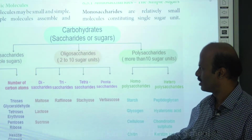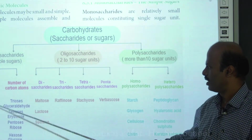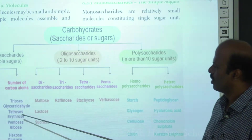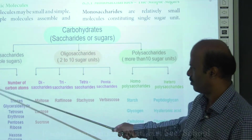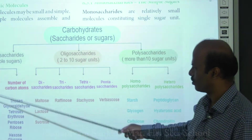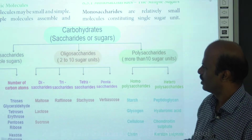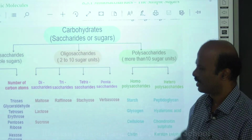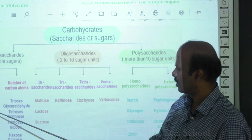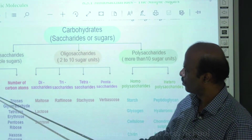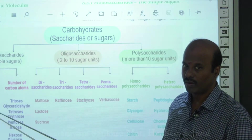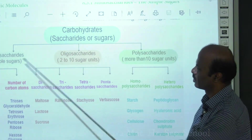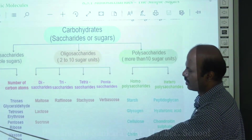Monosaccharides contain a functional group — either an aldehyde group or a ketone group. If the functional group is an aldehyde group, the monosaccharide is called an aldose; example: glucose. If the functional group is a ketone group (C=O), it is called a ketose; example: fructose. Based on functional groups, monosaccharides are classified into aldoses and ketoses.